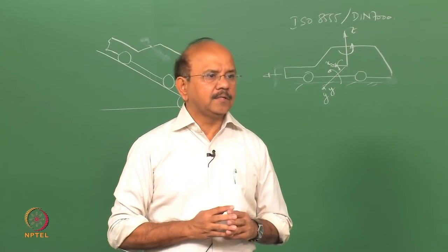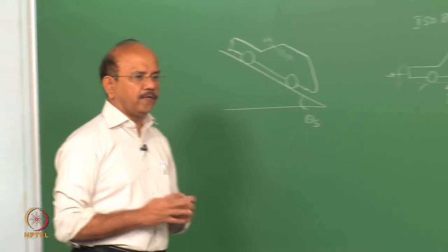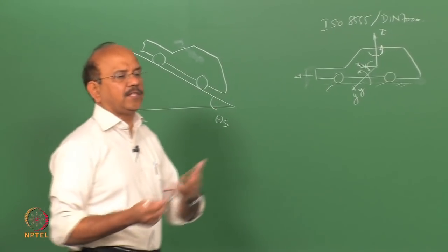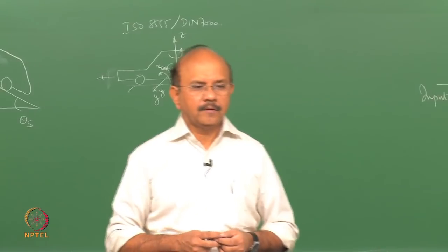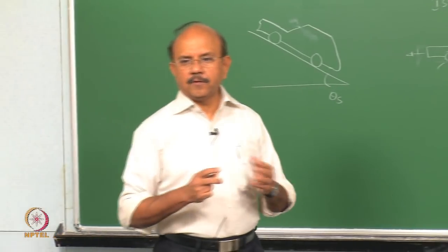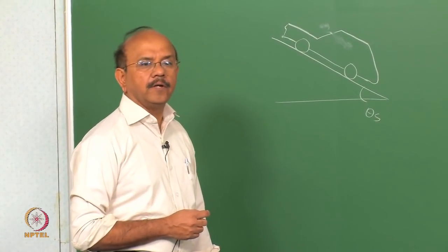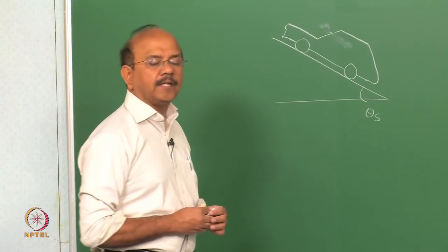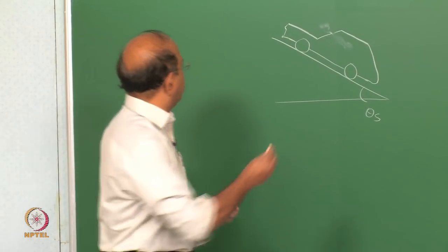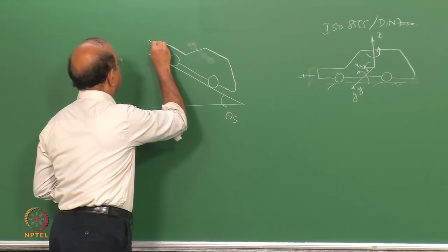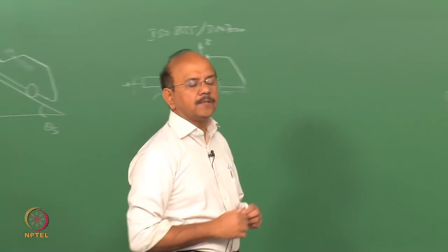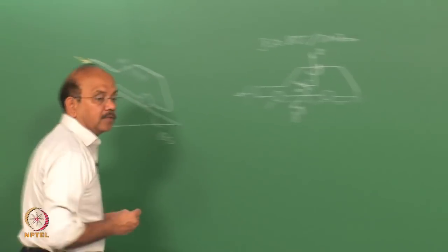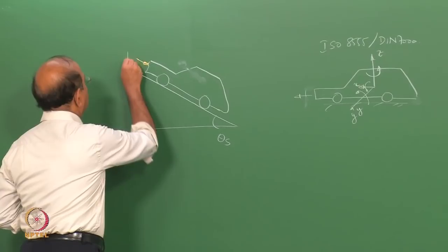Whenever we talk about dynamics, two things come to mind: the forces that are going to act on the vehicle, and the acceleration or deceleration. Newton's F = ma is going to be of great help in writing down this mathematical model. The first external force acting on the vehicle is what is called the aerodynamic force, which we call Ra.